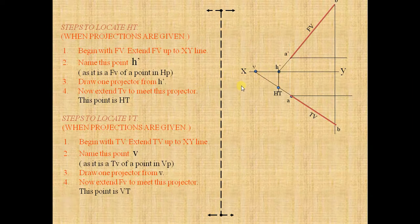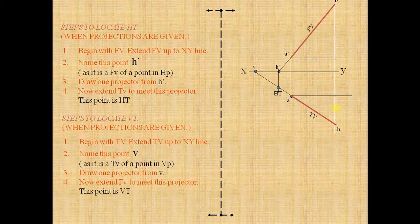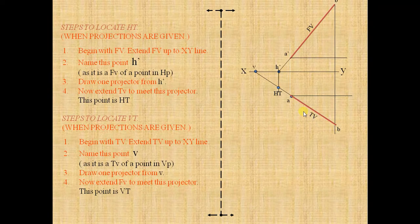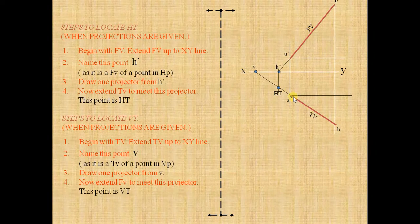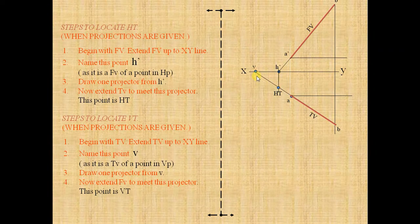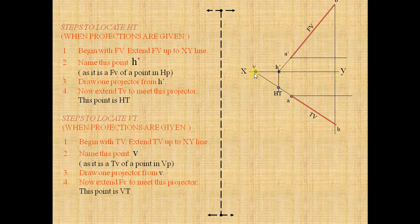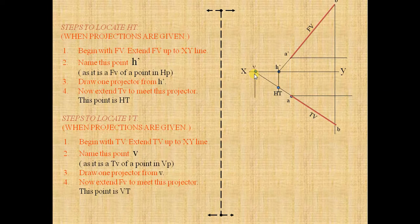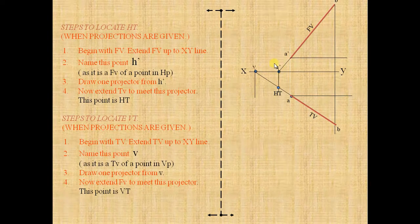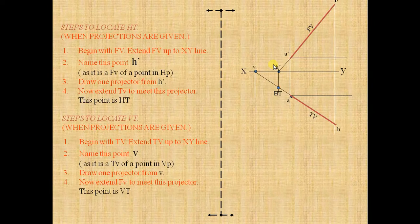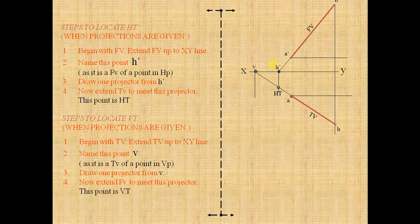Now locating this vertical trace. Begin with TV means we should first begin with this down line TV, top view line, and extend to the X-Y line so that we get the point here V. Draw one projector from V to downwards.